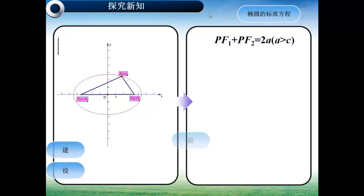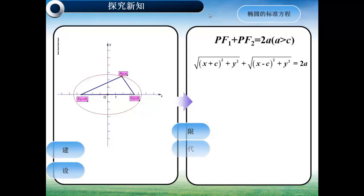将PF₁、PF₂用两点间距离公式，可以表示为：根号下(X+C)²加Y²，加上根号下(X-C)²加Y²，等于2A。那么接下来我们的问题是，怎样来化简呢？